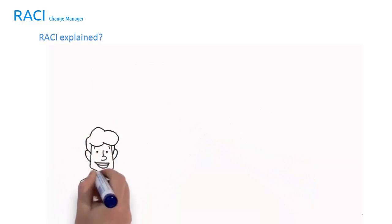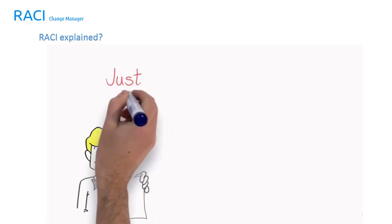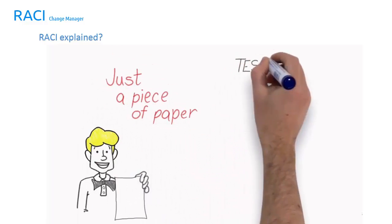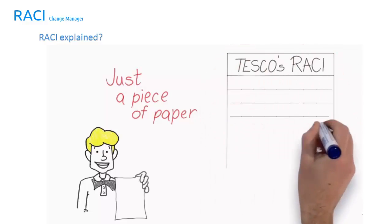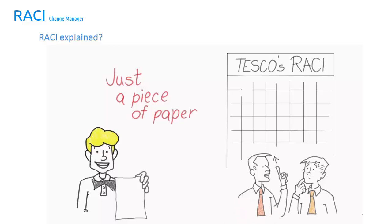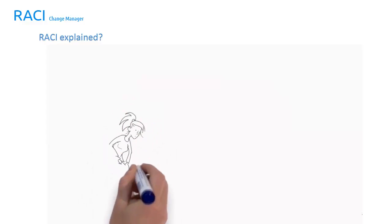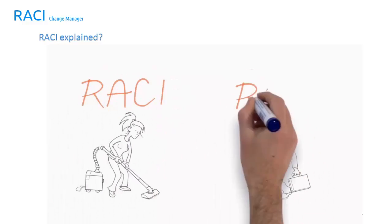The RACI model, if written and not practiced, is just a piece of paper. RACI creates efficiencies when used, and organizations the size of Tesco in the UK, with over 500,000 employees, have used RACI to assist all staff in understanding their role in a very large organization. So whether at work or at home, there is a place for RACI in everyone's world.